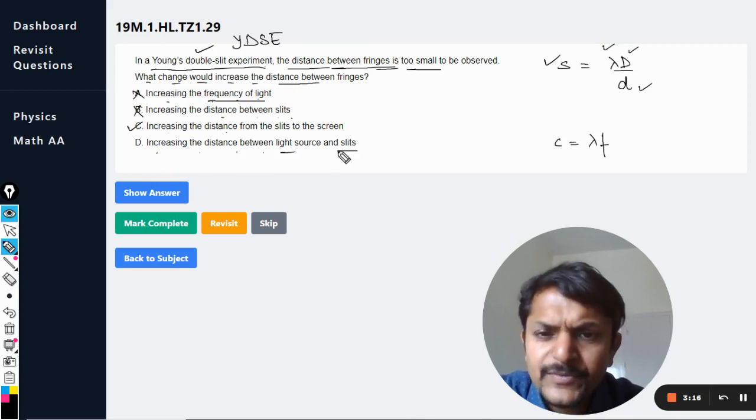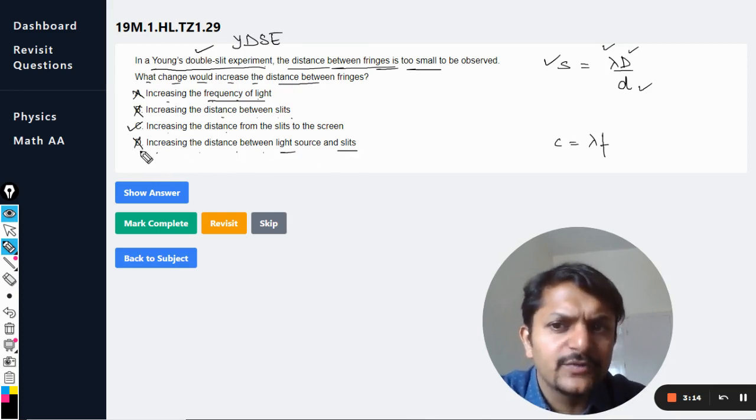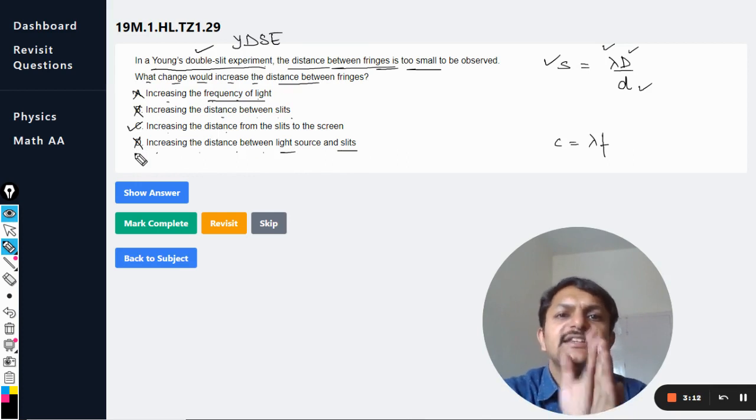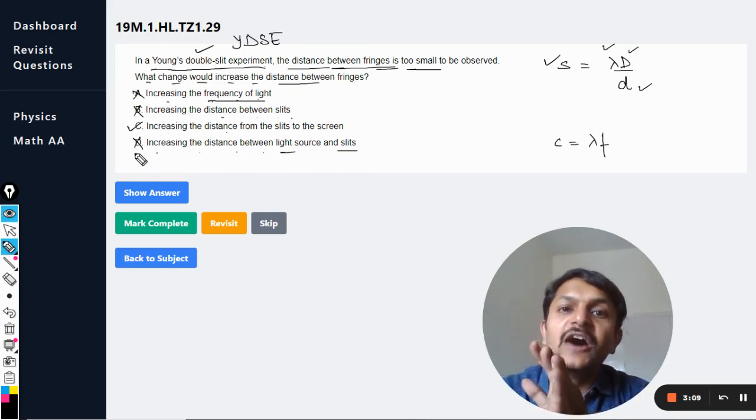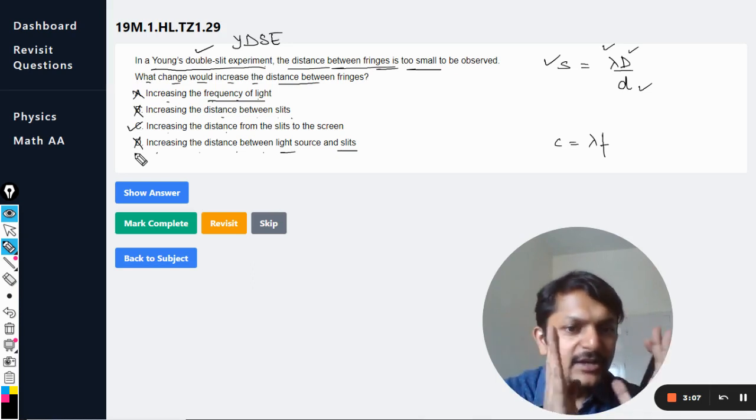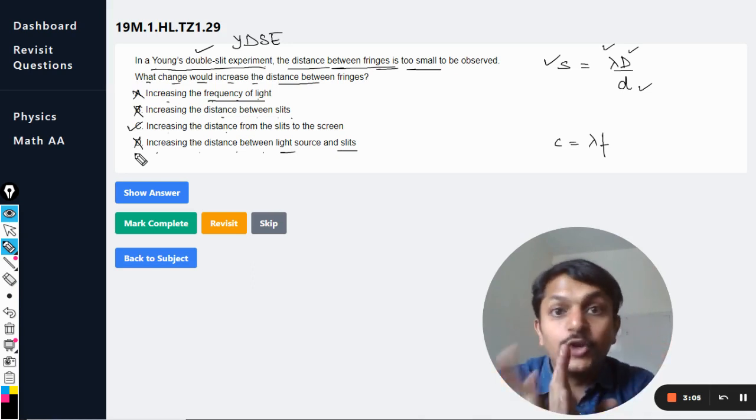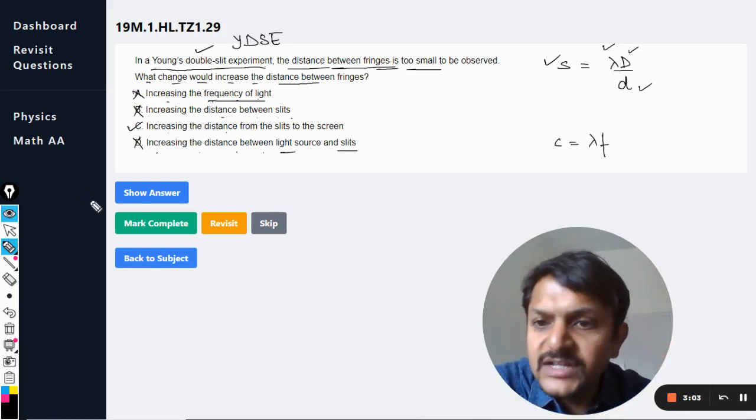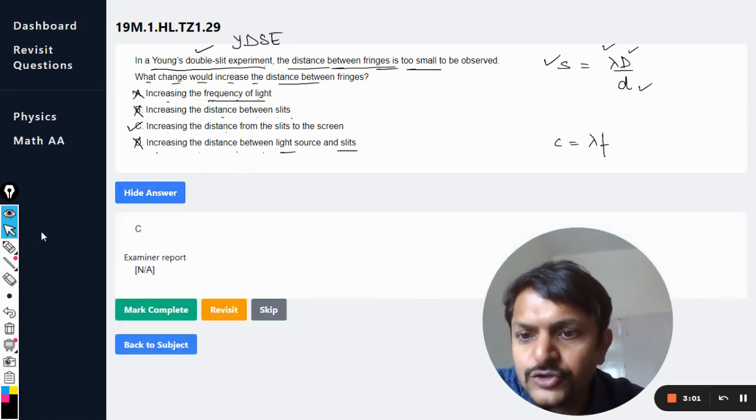Increasing the distance between the light source and the slits - well, this doesn't make any sense because we are not talking about the distances before the slit. We are only concerned with the distances after the slits up to the screen. So that is the only thing that we are concerned with, not the previous one. So even D is wrong.